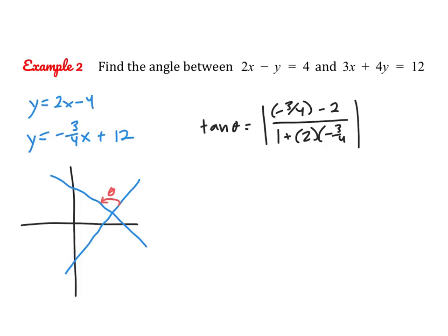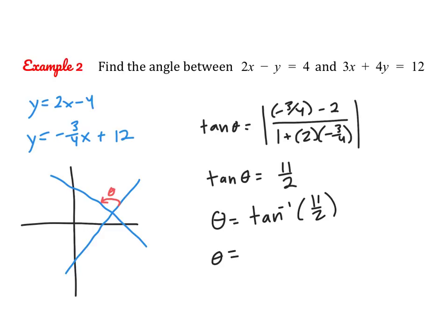Simplifying that, the tangent of theta becomes 11 halves when you simplify what's inside the absolute value signs. Now we use arc tangent to find theta, and we end up with theta equals 1.3909, which is about 79.7 degrees. I can double-check this against our graph to make sure the angle makes sense — and it does, so we are all done.